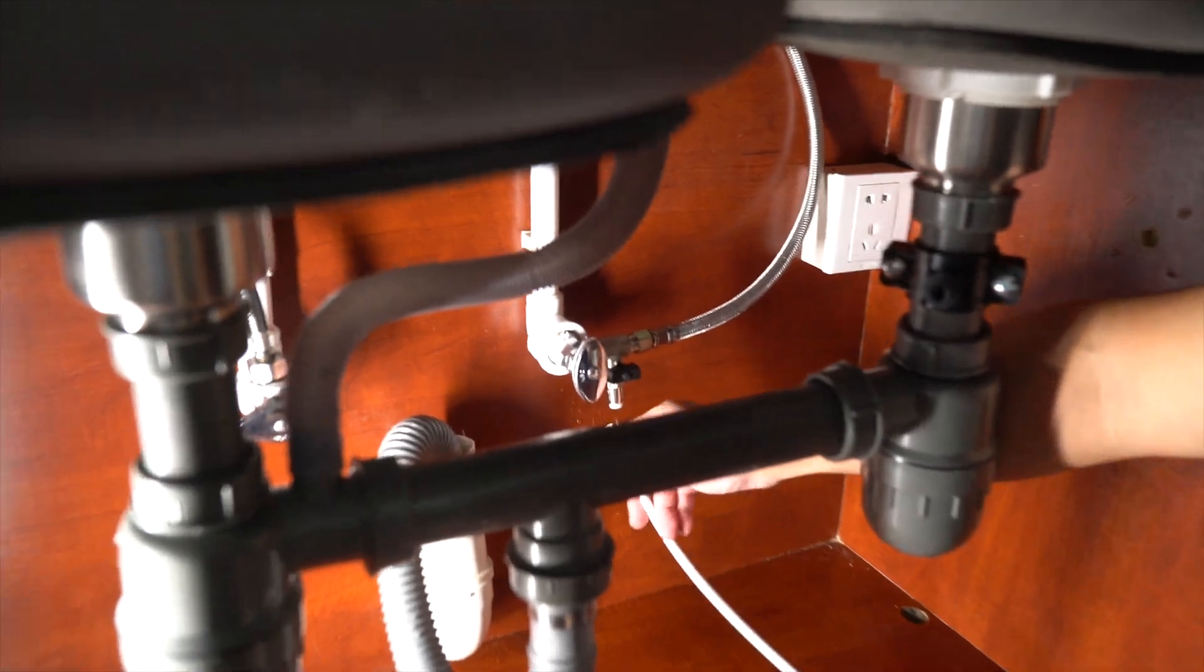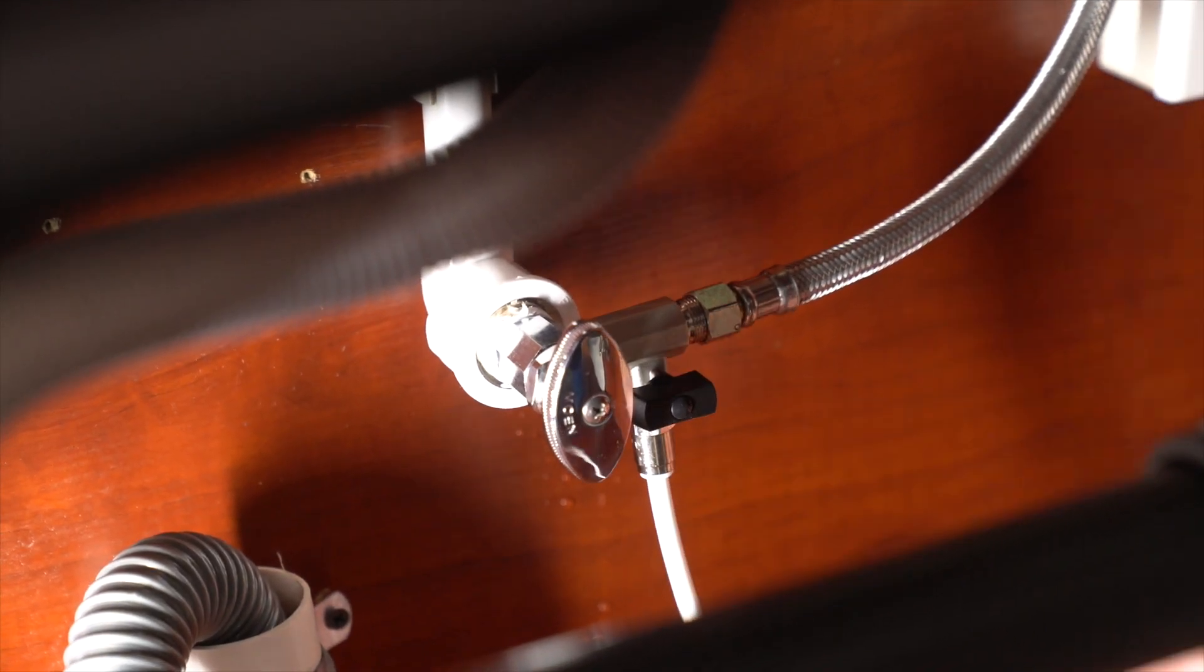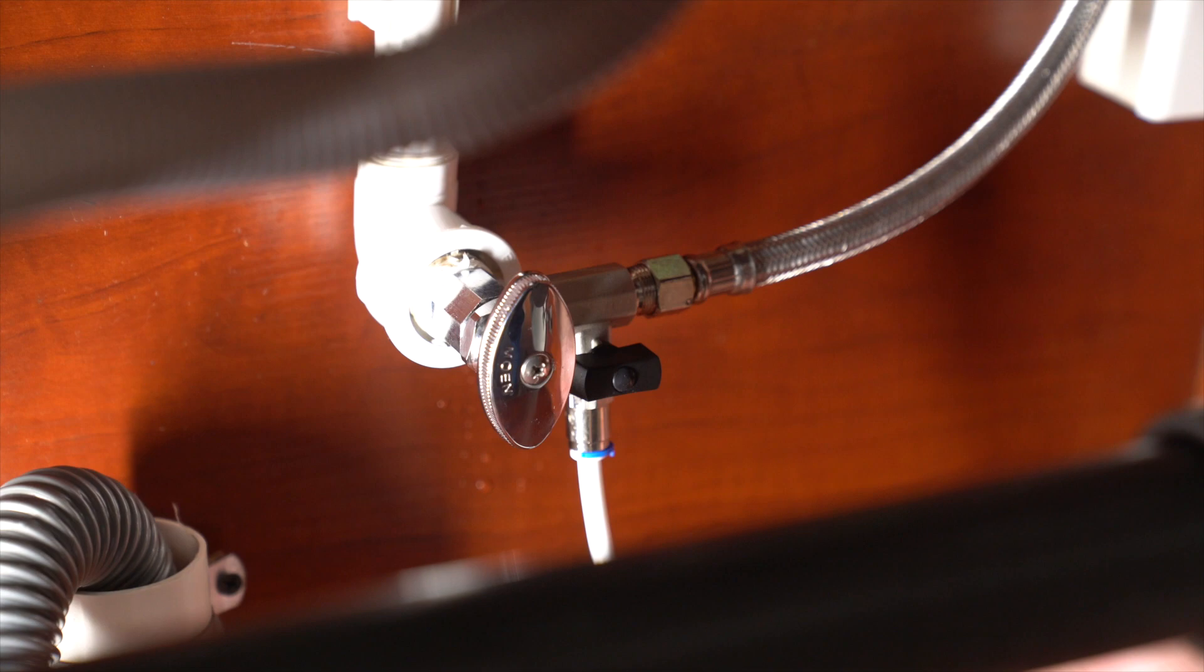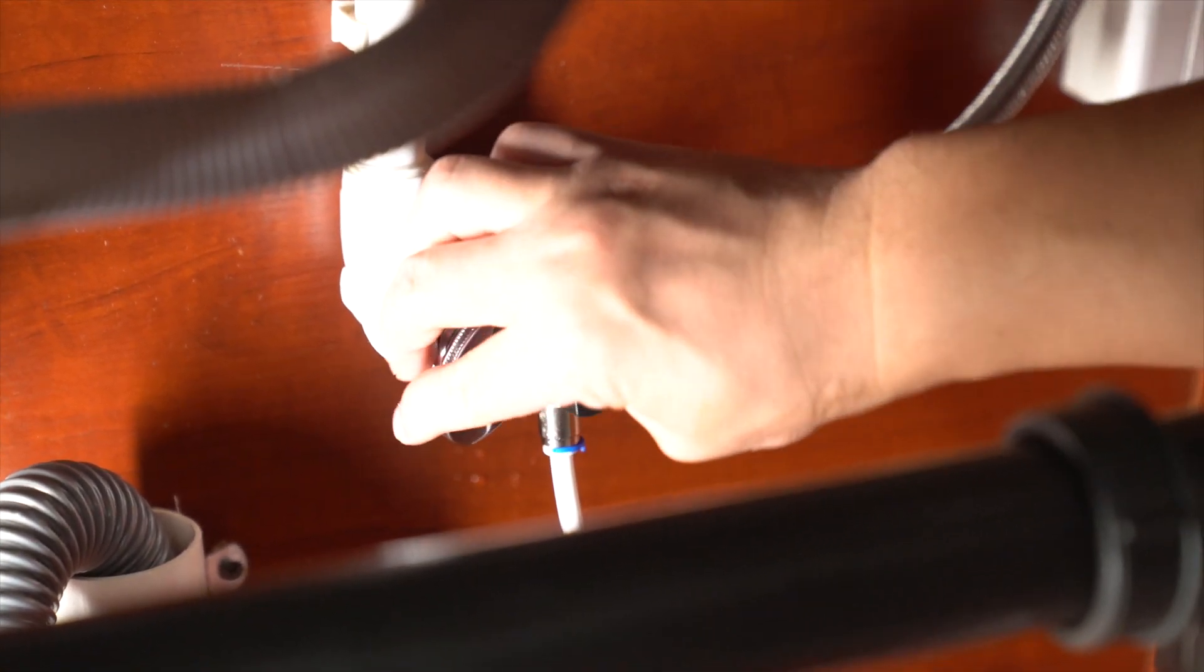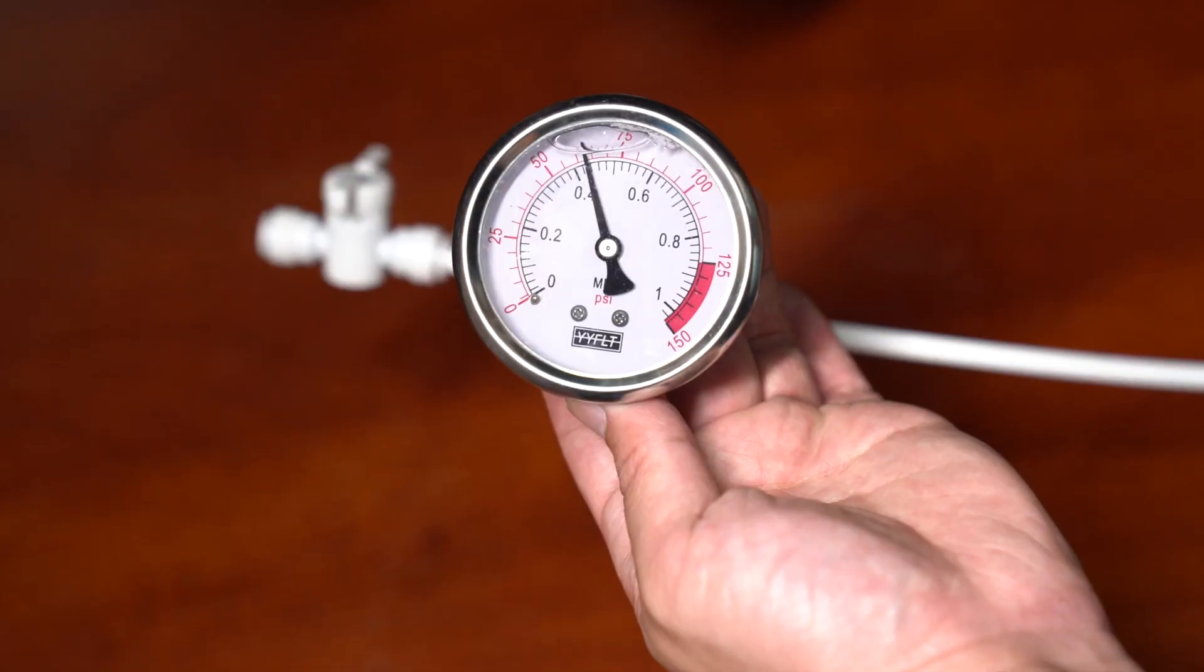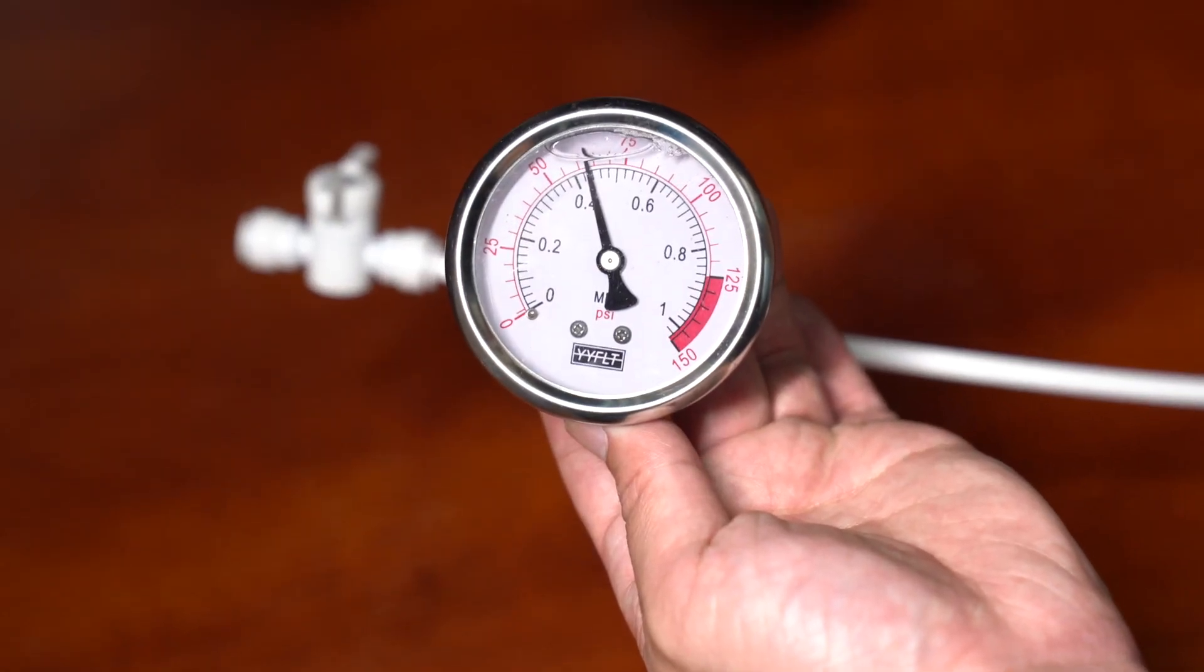Before you begin installation, confirm your cold water pressure is between 40 to 80 PSI using a pressure gauge. If lower than 40 PSI, a booster pump may be required. If over 80 PSI, a pressure reducing valve is required.